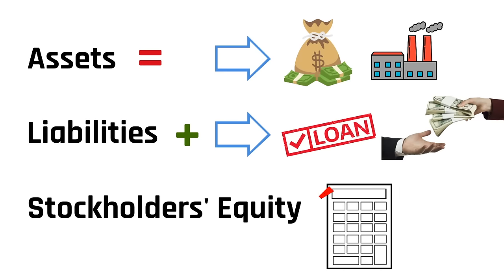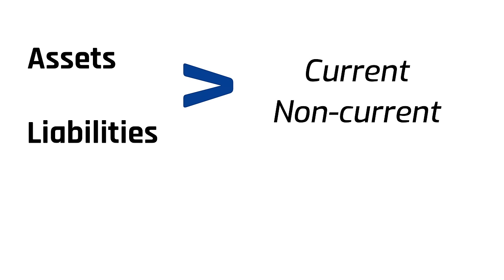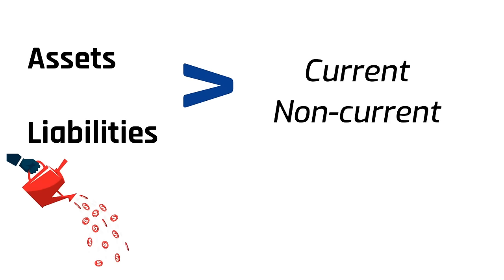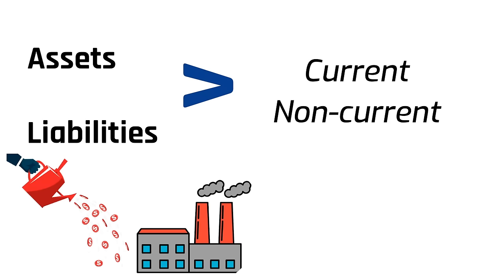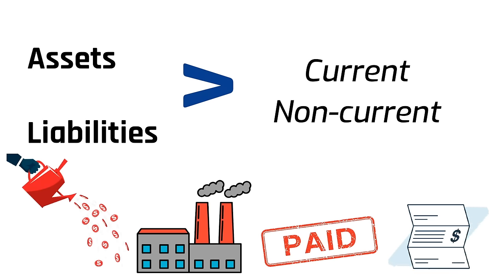Both the asset section and the liability section are further broken up into two subcategories: current and non-current. Current assets are those that you can convert into cash within one year, such as short-term investments and accounts receivable. Non-current assets are longer-term assets whose full value you cannot recognize within one year, such as property and machinery. For liabilities, current liabilities are expected to be paid off within one year, while non-current liabilities are those the company expects to have for longer than one year.